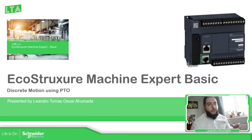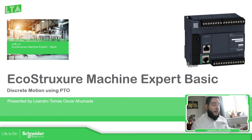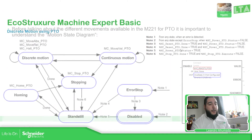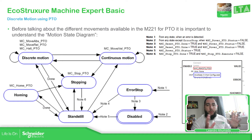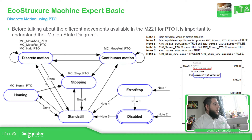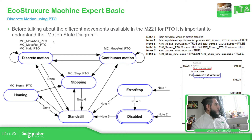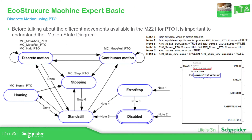Before starting with all the different function blocks that we have for PTO, it is important to know the state diagrams for the M221. This is the motion state diagram in the software. Depending on the function block we are using, we are in different states. What we're going to focus on in this part is the discrete motion, which has three function blocks: MOV Absolute, MOV Relative, and MC Hold.